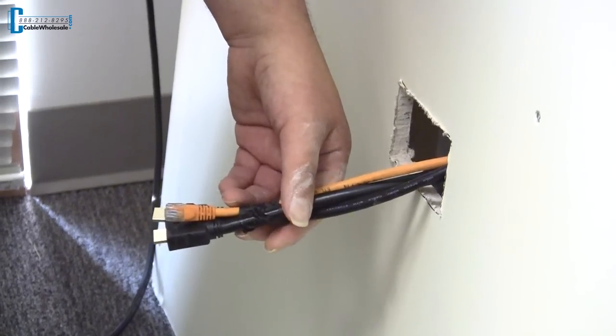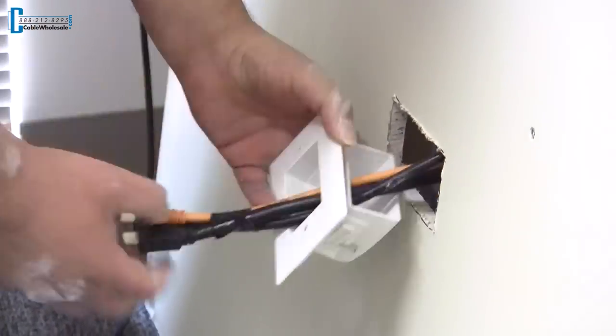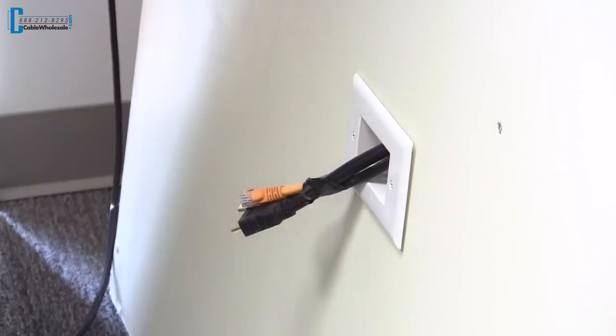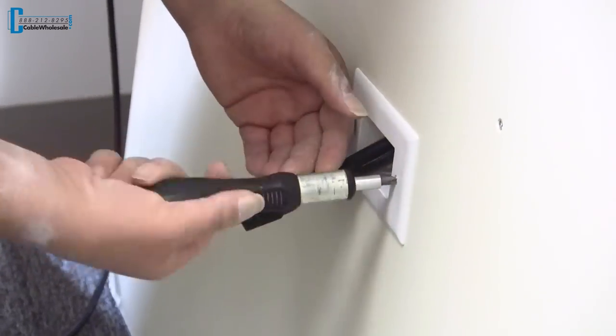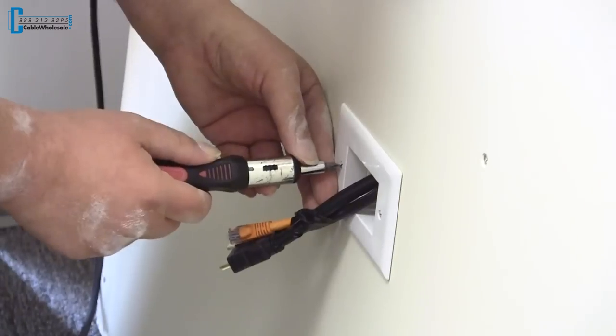Pull the cables through the bottom hole that was cut out and mount the pass-through to the wall.